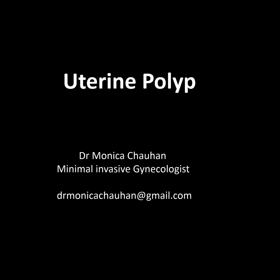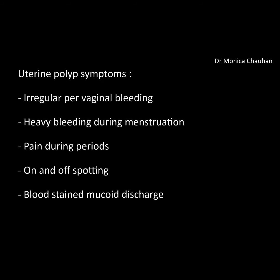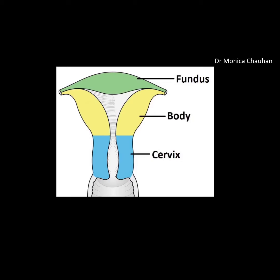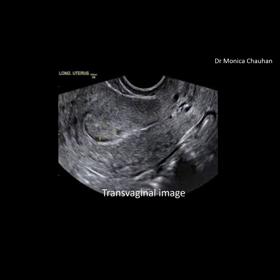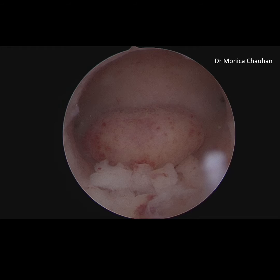Uterine polyp is a common gynecological entity. A woman can present with varied symptoms; they have fleshy outgrowths of endometrium. They can be single or multiple. A transvaginal image can show a polyp, but the gold standard for diagnosis is hysteroscopy.